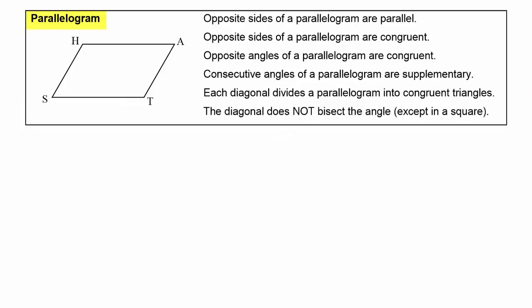Next, let's review what we know about the angles and sides in a parallelogram. The opposite sides of a parallelogram are parallel to each other, so side HS is parallel to side AT, and HA is parallel to ST. Also, the opposite sides of a parallelogram are congruent: HS equals AT, and HA equals ST.